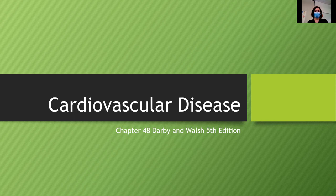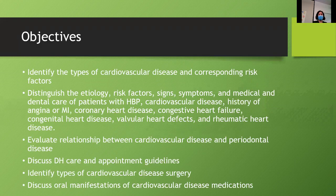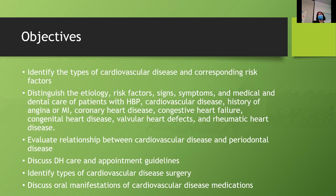We're going to do cardiovascular diseases. This is chapter 48 in Darby and Walsh. These are the objectives here. We'll identify the different cardiovascular diseases and risk factors and talk briefly about etiology, risk factors, signs and symptoms. A lot of this stuff you've had already, so I don't like to go in depth because it gets kind of repetitive. There is so much to go over.